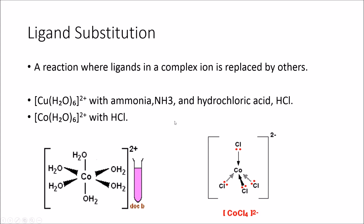Next: ligand substitution. It's fairly self-explanatory — it's a reaction where one ligand is swapped out or replaced by another. In the case of hexa-aqua copper, the water ligands can react with ammonia (NH3), which swaps in for the H2O. When reacting with hydrochloric acid, Cl- ions swap out for H2O molecules. The same substitution occurs with hexa-aqua cobalt reacting with HCl. Visually, six H2O ligands are simply replaced by Cl- ligands.